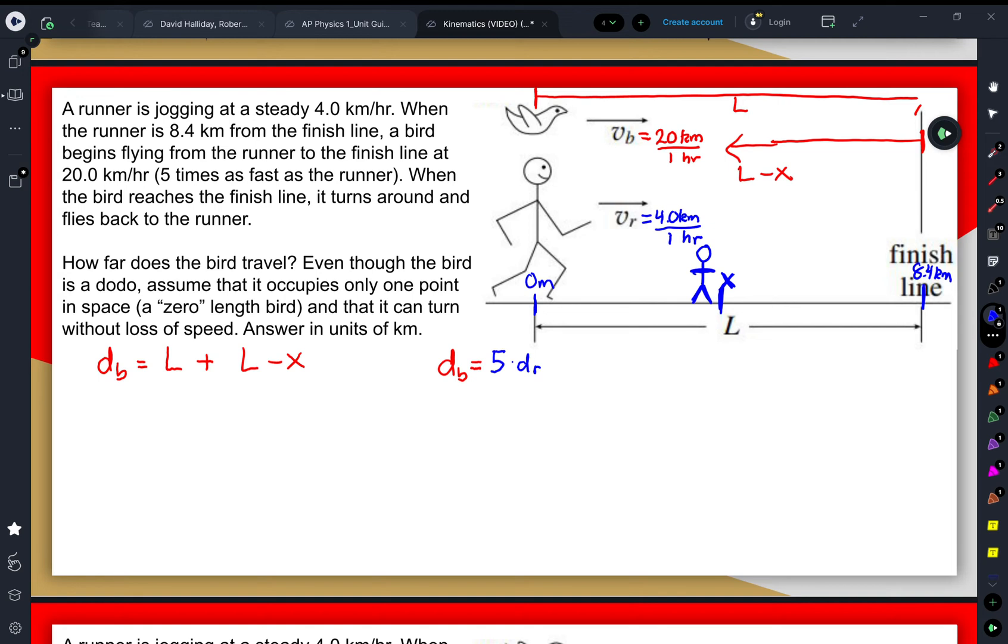So if we were saying that the distance of the runner was x, that means that this is going to be equal to 5x. And that means that the distance of the bird, which we said was going to be 2L minus x...